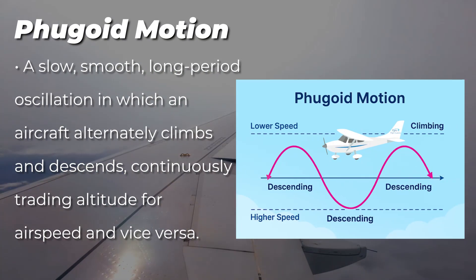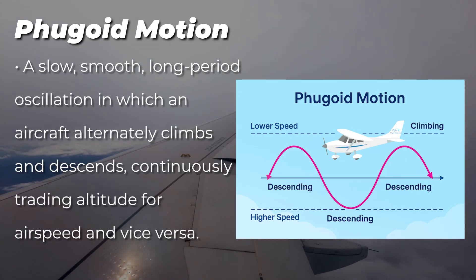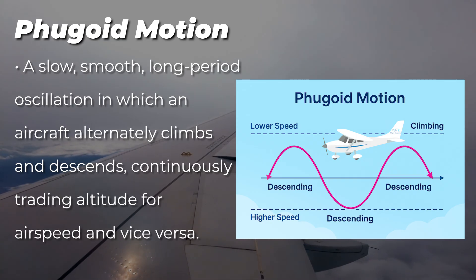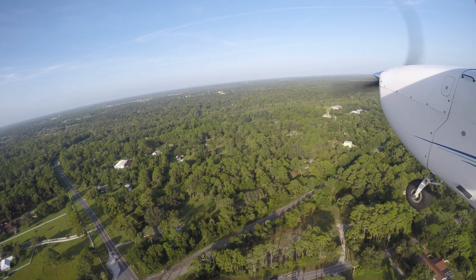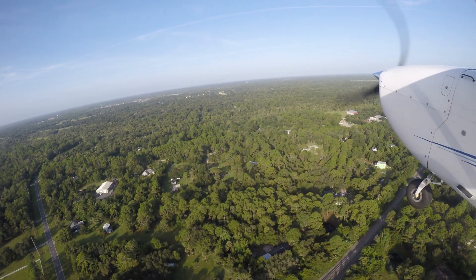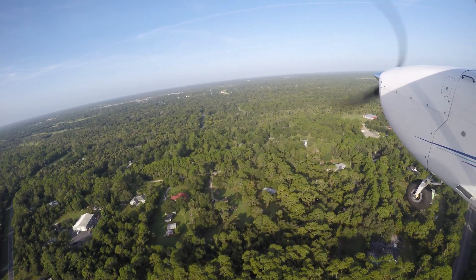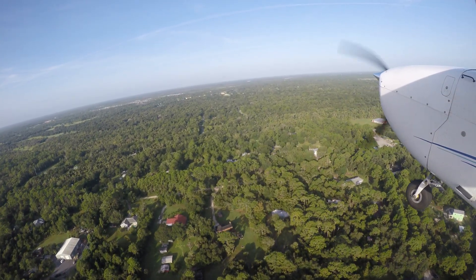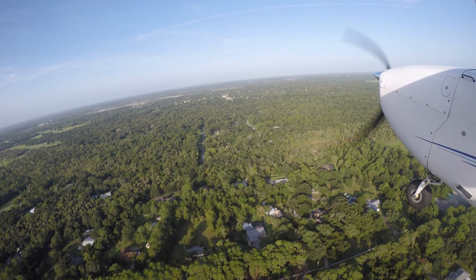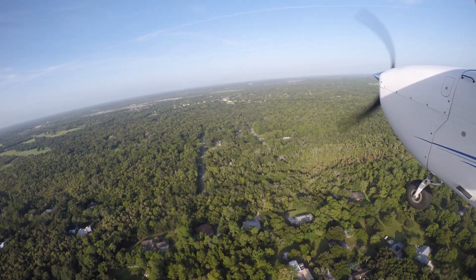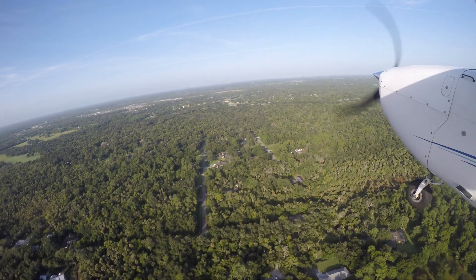Phugoid motion is a slow, smooth, long-period oscillation in which an aircraft alternately climbs and descends, continuously trading altitude for airspeed and vice versa. Phugoid motion is typically self-correcting and not dangerous, requiring little or no pilot input.